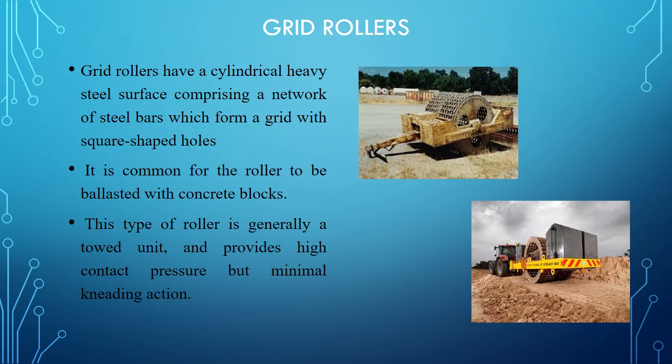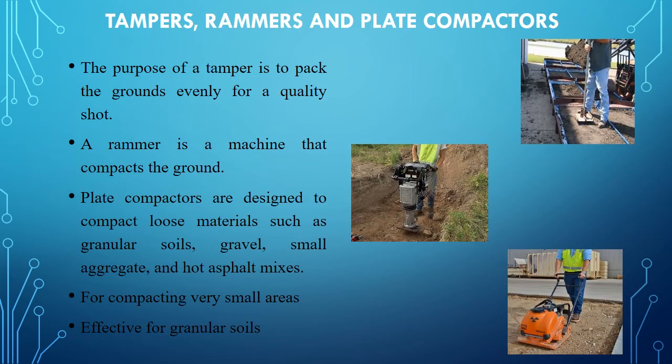Grid rollers are commonly used for field compaction and shallow compaction purposes, and it is common for the roller to be ballasted with concrete blocks. Next are tampers, rammers, and plate compactors. The purpose of a tamper is to pack the ground evenly.